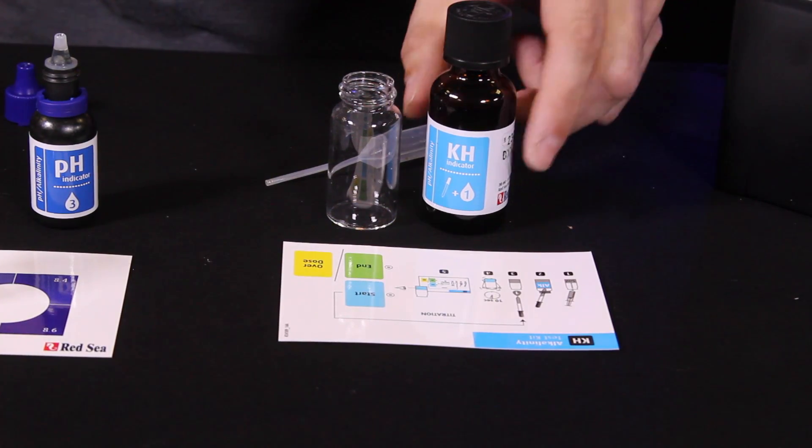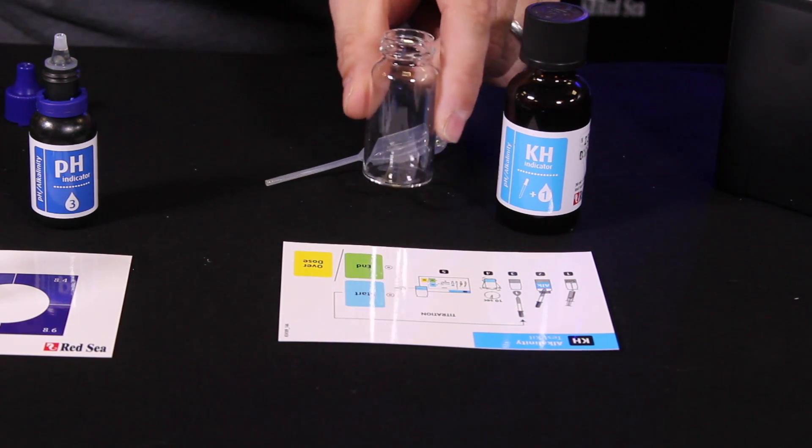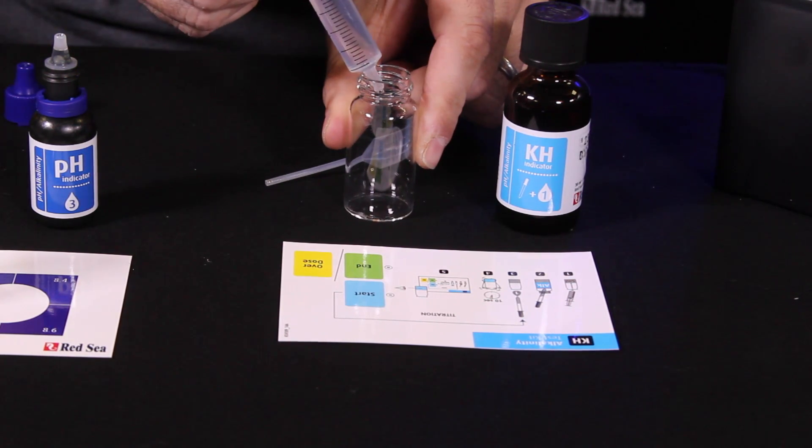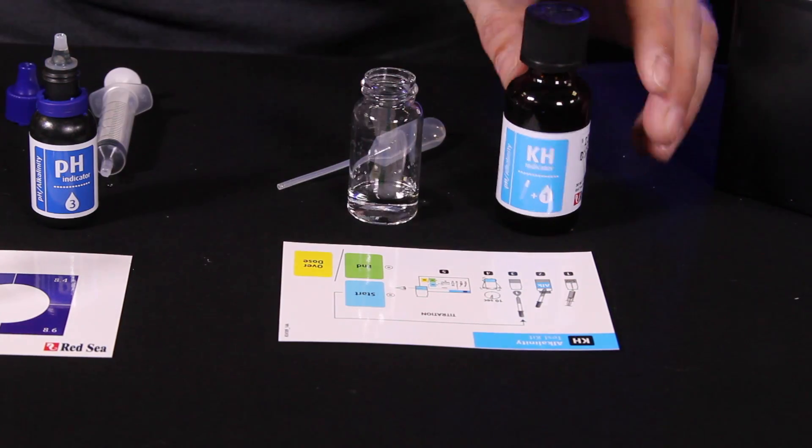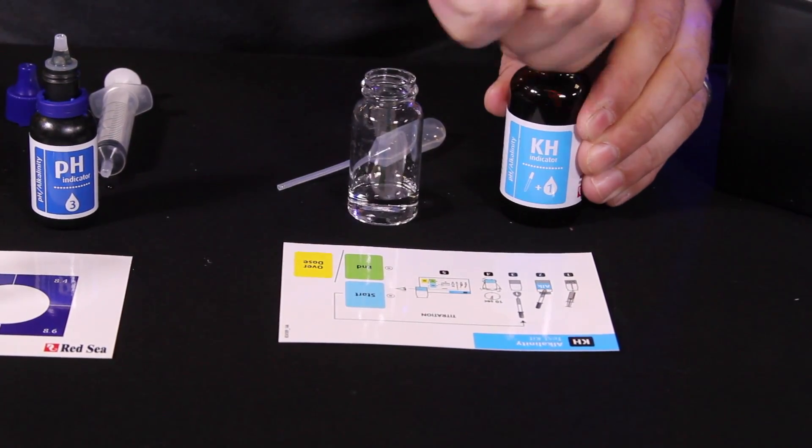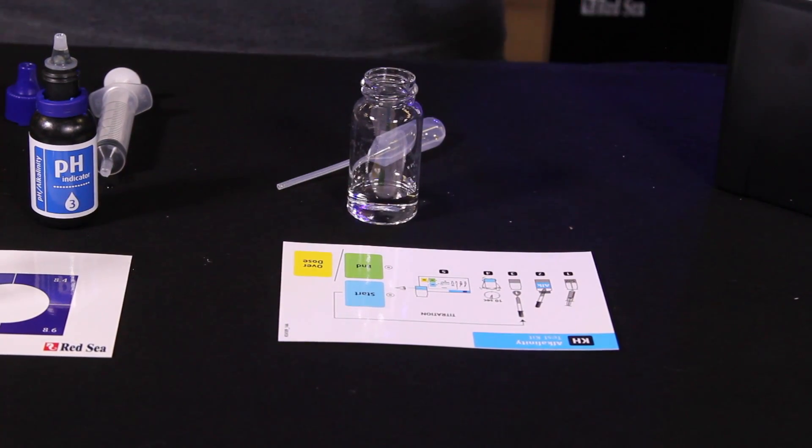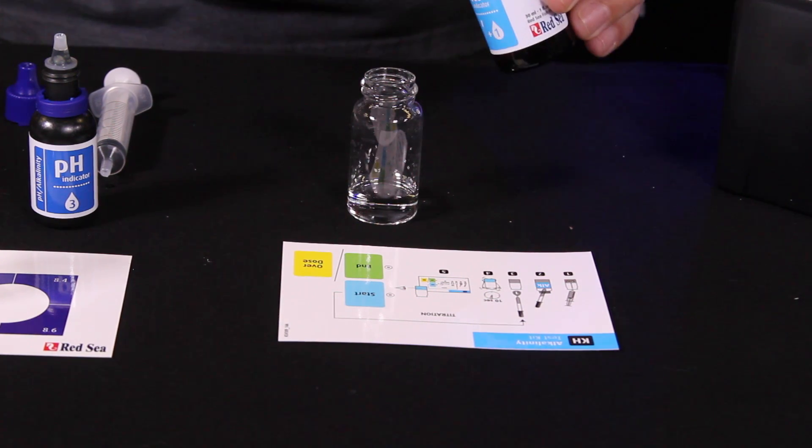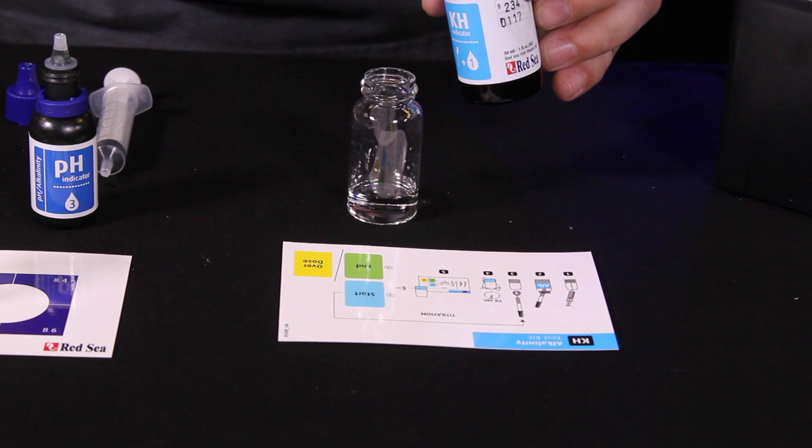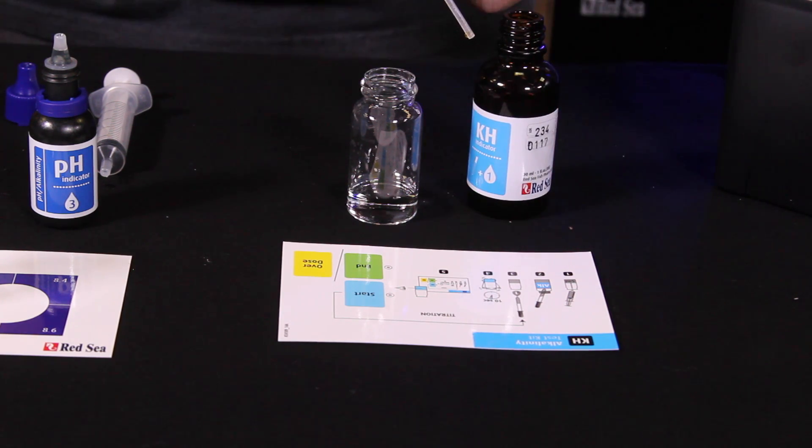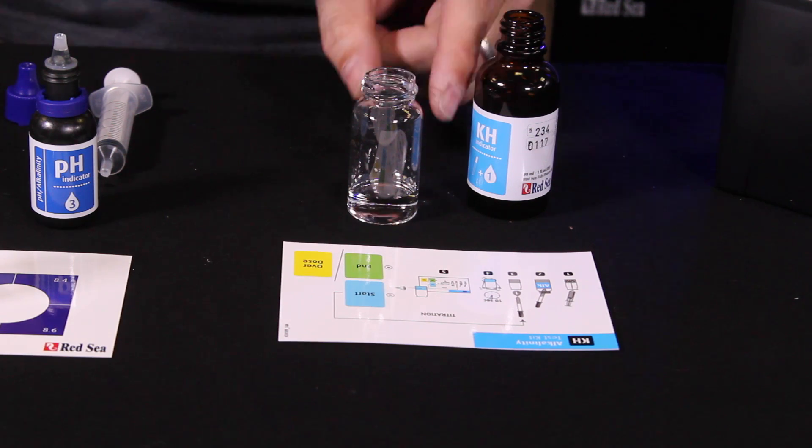All right, now we're going to do our alkalinity test. This is a titration test where you start by adding five milliliters of our sample water to the solution. And then we're going to draw up the reagent into a dropper. And what we're doing here is we're counting the number of drops it takes to get a color change. Now here you'll see the vial is a little bit empty, so I want to make sure I get even drops in there. So we're going to start with one.